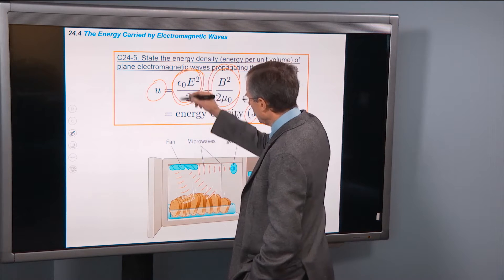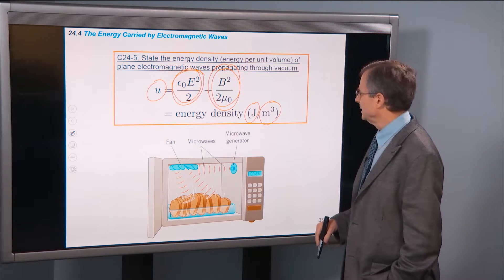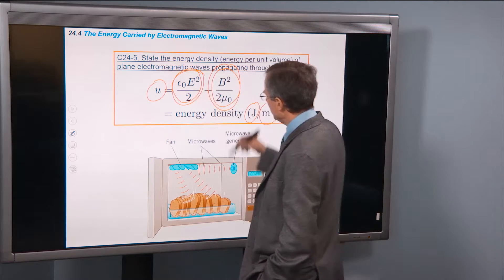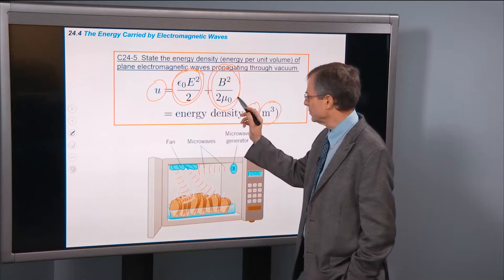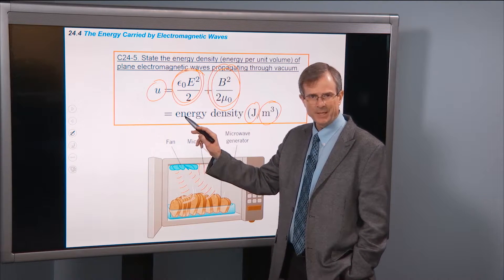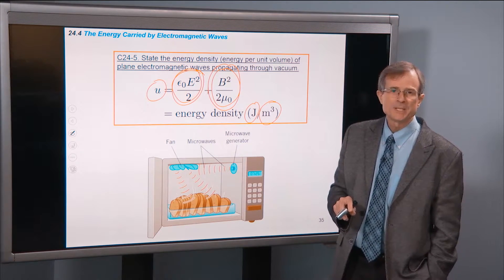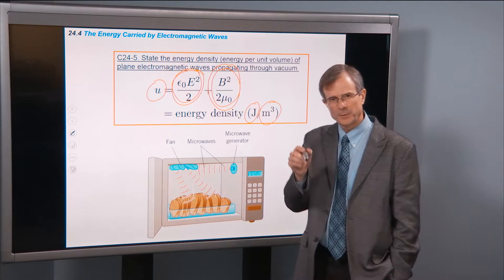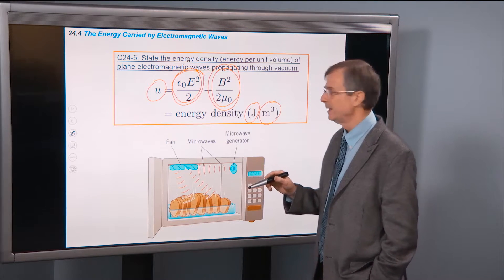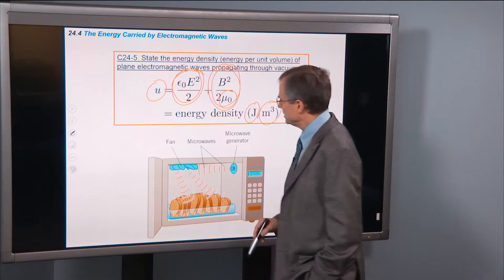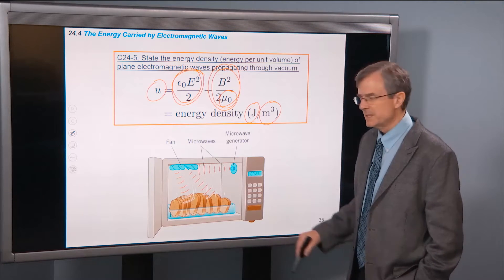So the total energy density, energy per unit volume, has an electric and a magnetic component. Both of them involve the squares of a field, e squared versus b squared. Both of them involve a two in the denominator. The electric field involves ε0. That's the electric permittivity of free space. C is 1 over the square root of μ0 times ε0. That's that same quantity, 1 over 4πk. And then μ0 is the magnetic permeability of free space, 4π times 10 to the minus 7.